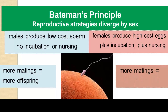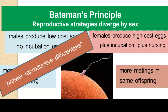By contrast, more matings for females won't increase the number of offspring, so females should try to choose the best mates from those available. The idea is that there are greater reproductive differentials between males — as in the case of the bull elephant seals — than there are between females. We are going to question this in just a minute.